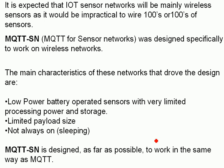MQTT for sensor networks was designed specifically to work on wireless networks. The main characteristics that drove the design are low power battery operated sensors with very limited processing power and storage, and limited payload size.